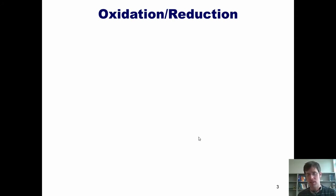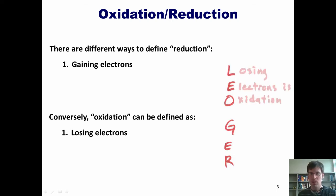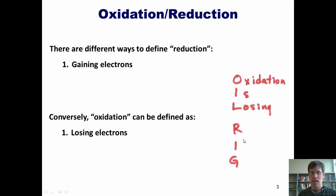An easy way to remember this is by remembering that Leo the lion says Grr. In other words, losing electrons is oxidation and gaining electrons is reduction. Another mnemonic you can use is OILRIG. Oxidation is losing, reduction is gaining.